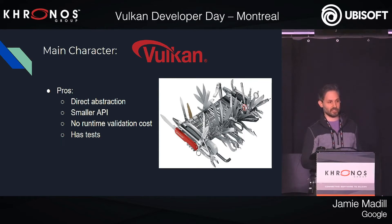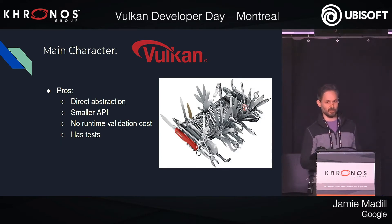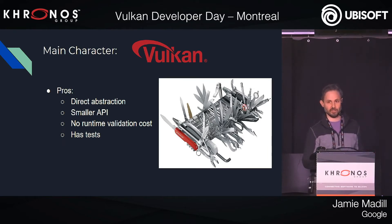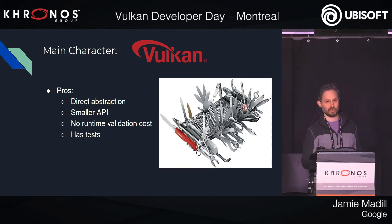A lot of the extra cost of validation that you get in OpenGL is pretty optional in Vulkan — there are great Vulkan validation layers, but really when you're making a shipping application, you usually turn those off. It gives you a lot of other ways to control performance, and one of the nice things about Vulkan is that it has pretty good testing right out of the box. If you want to ship a Vulkan driver, there are conformance tests you have to pass, and this should improve over time.